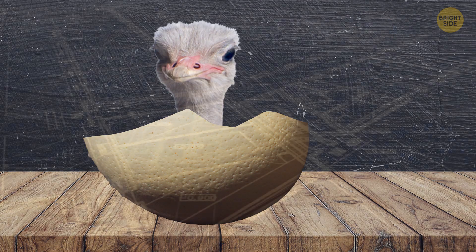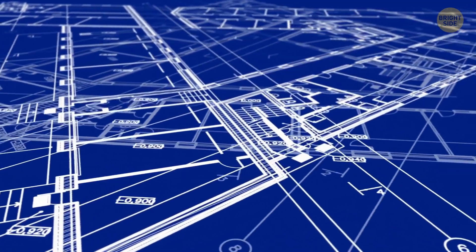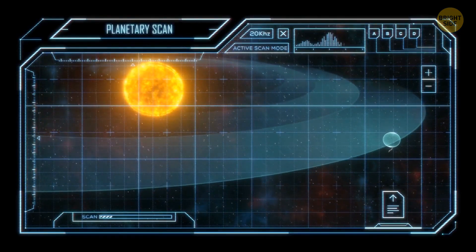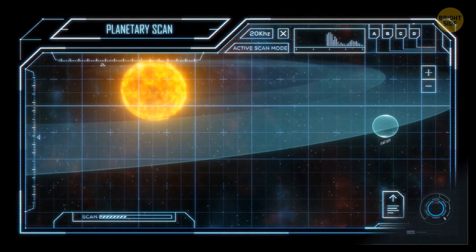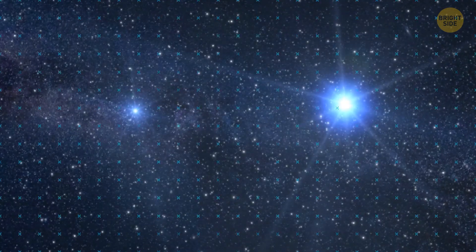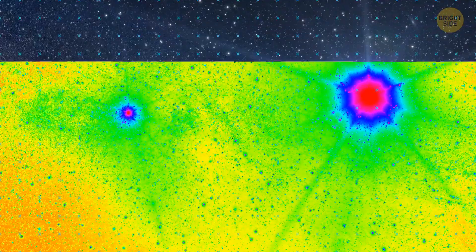A team at Penn State built a special tool called the Habitable Zone Planet Finder. It's an instrument that's supposed to find planets around dim, cool stars. It's connected to a big telescope in Texas. The tool looks at the light from these stars, which is mostly in the near-infrared, beyond what our eyes can see.